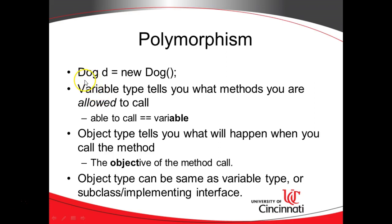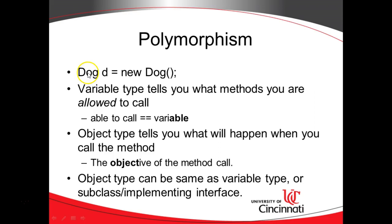Let's start by considering this very first bullet point: Dog d equals new Dog. We have a variable named d, and the variable type is Dog. There's an object, and the object type is also Dog. We are creating a new object of the class called Dog by invoking the constructor, which we know because we are preceding it with the new keyword. So we have a variable type which is Dog, and an object type which is also Dog.